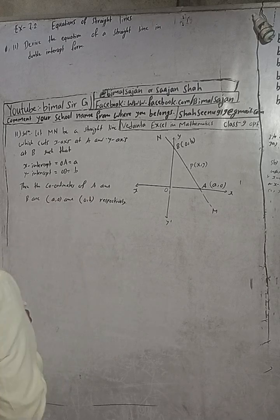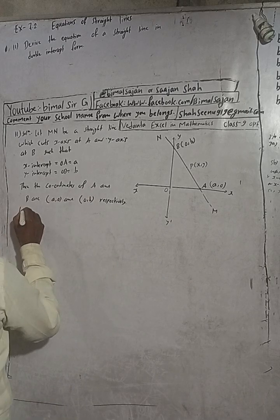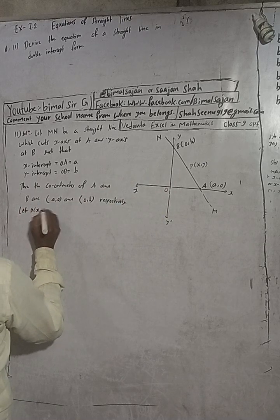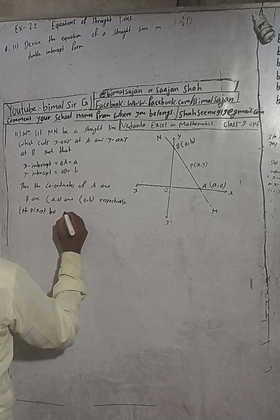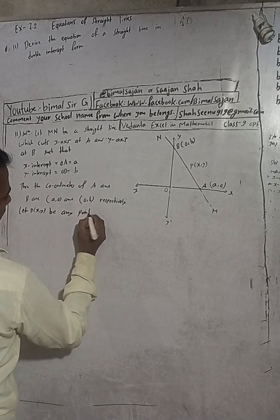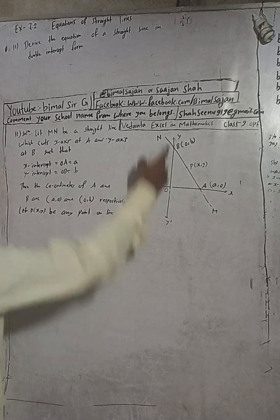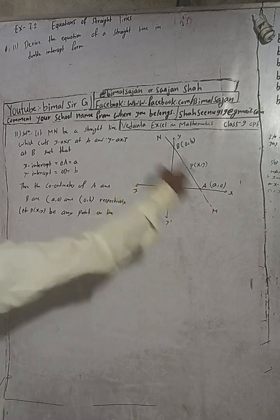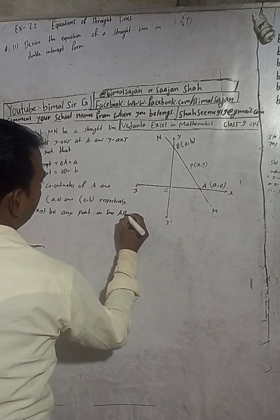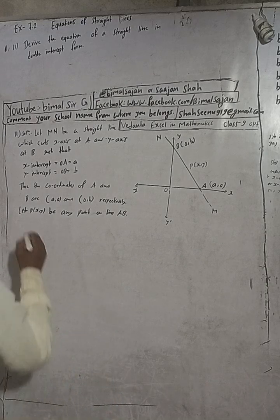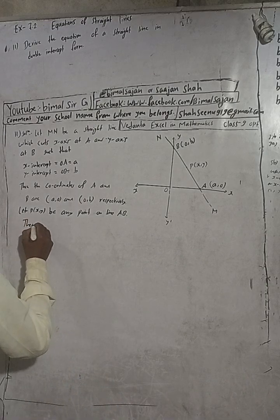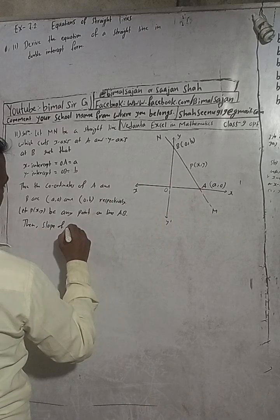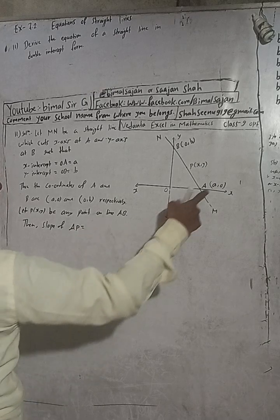Now let P(x, y) be any point on the line MN, also referred to as line AB. Now we find the slope of AB. The slope formula is: slope equals (y₂ minus y₁) divided by (x₂ minus x₁).